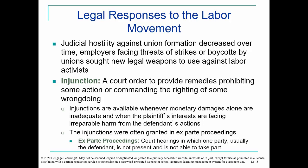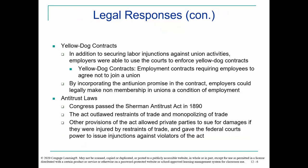Yellow dog contracts, which have already been mentioned — those are employment contracts that require employees to agree that they will not join a union. By making an anti-union promise part of an employment contract, employers could legally make non-membership in unions a condition of employment. The argument has always been, well, if they wanted to join a union they didn't have to sign this contract. The fact is, yes they did, because if you don't sign the contract you don't get the job.